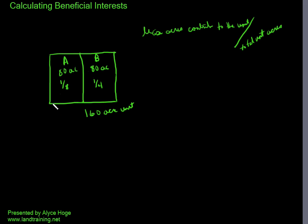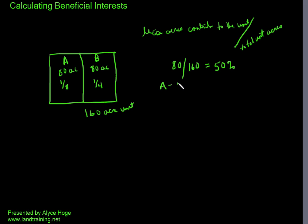If we want to calculate what each owner's working interest is, we're going to take the lease acres contributing to the unit — so for Owner A that's 80 acres — and divide that by the total number of acres in the unit, which is 160 acres. So that is 50%. Owner A's interest is going to be a 50% working interest, and the same thing for Owner B, because it's still 80 over 160 — 50%.